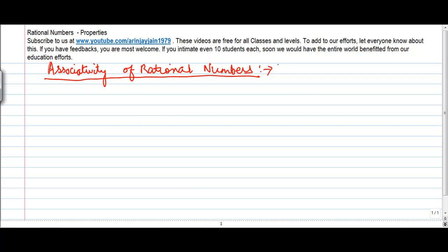In this video we are going to look at the associativity of rational numbers in case of division, which means that for three rational numbers, let's say a, b, and c, is a divided by b divided by c equal to a divided by b divided by c?